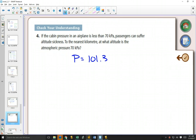101.3 times 0.88 to the k. So in this case, p stands for pressure in kilopascals, and k stands for the altitude in kilometers.